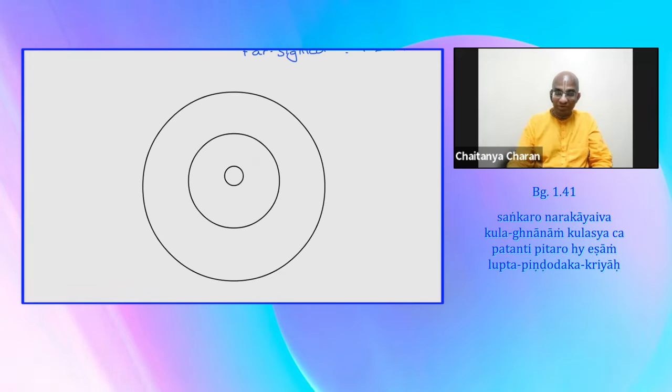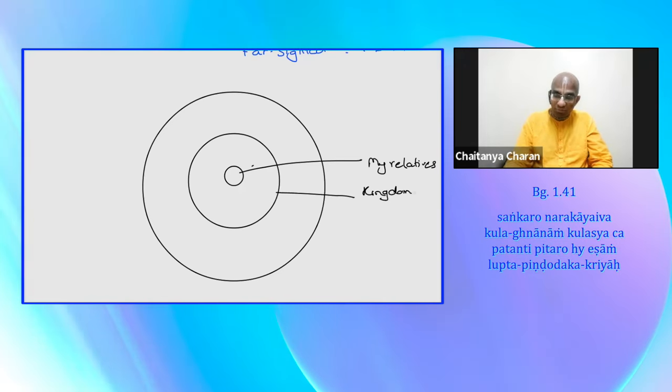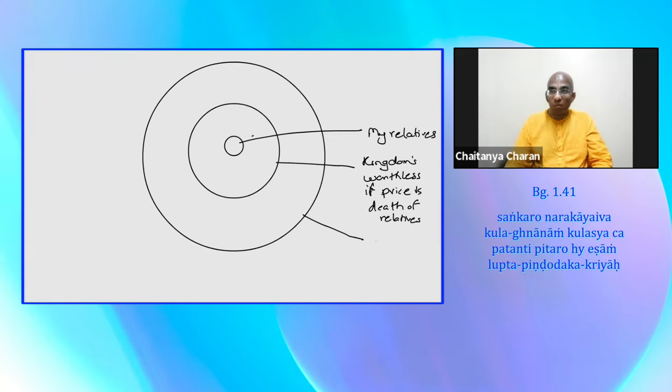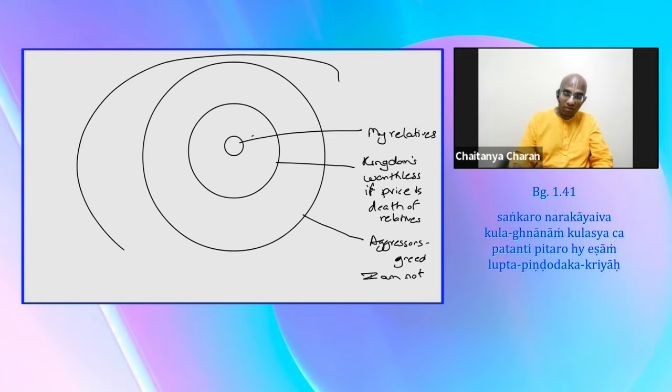Arjuna says, first reason is that they're my relatives. How can I kill them? Then he says, what's the point? You might get a kingdom, but kingdom is worthless if it comes at the death of relatives. Then he goes on and says, but what if they're aggressors? Well, they may be aggressors, but still they're my relatives. They are motivated by greed. Why should I be motivated by greed? I am not. So I shouldn't stoop to their level.